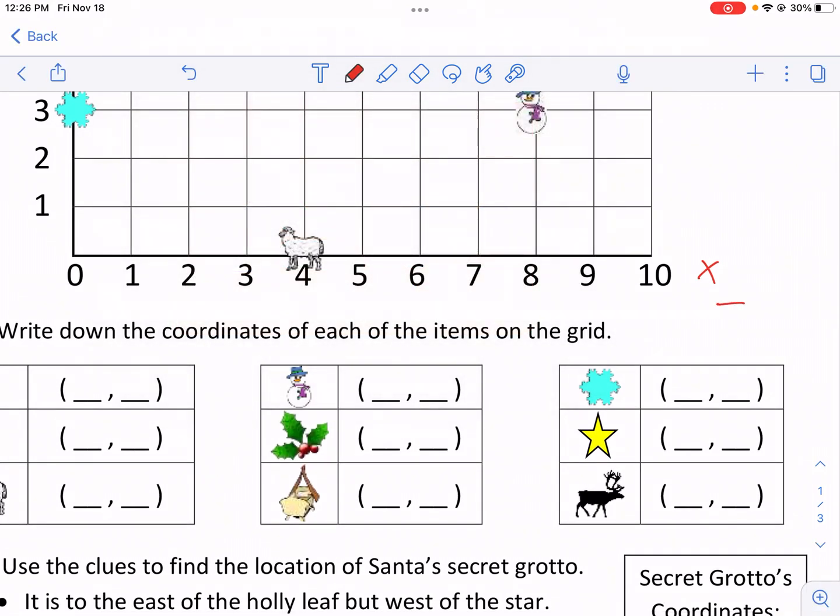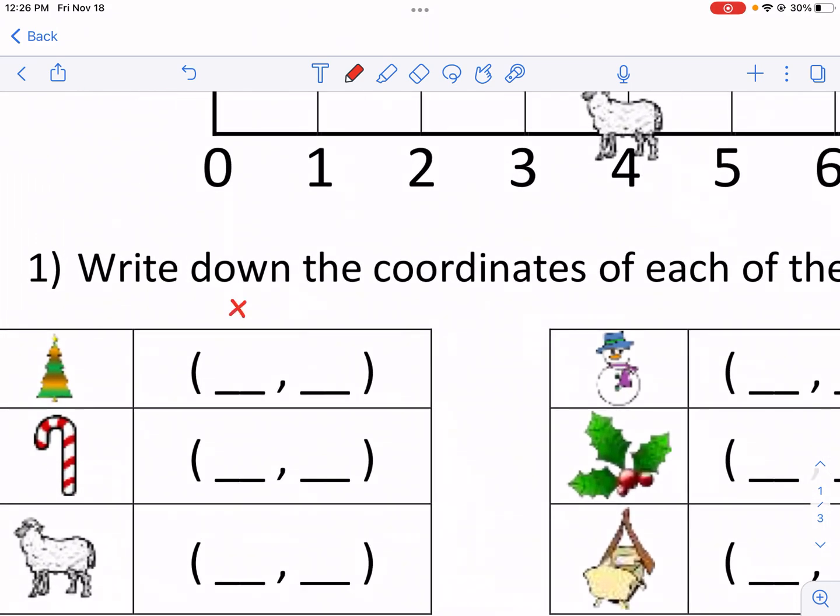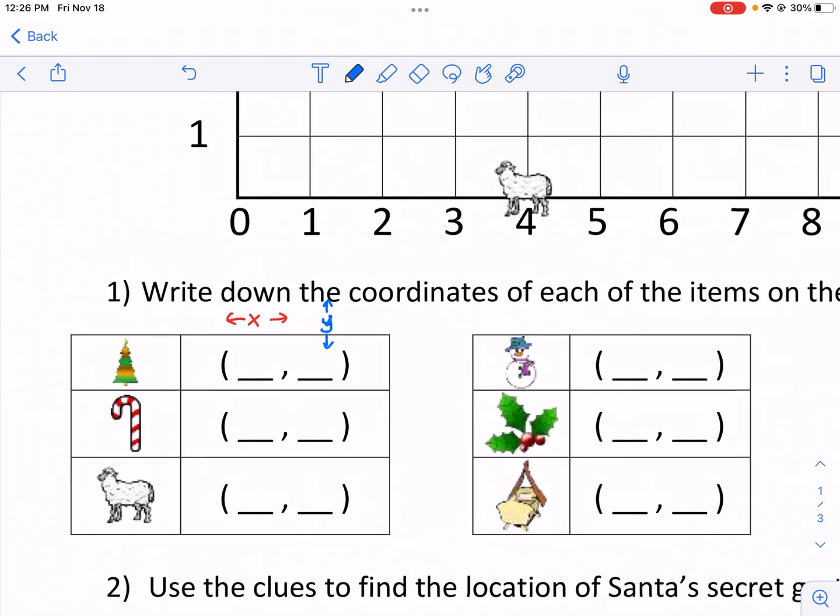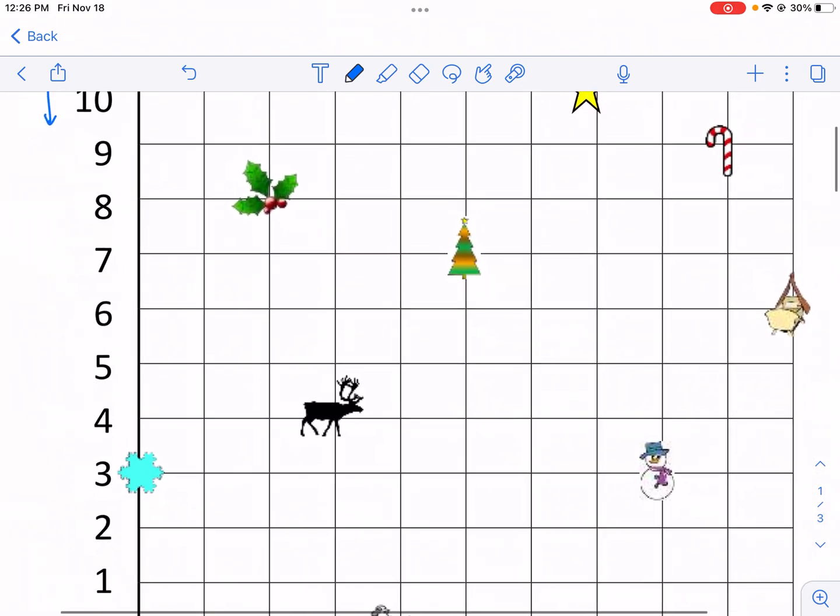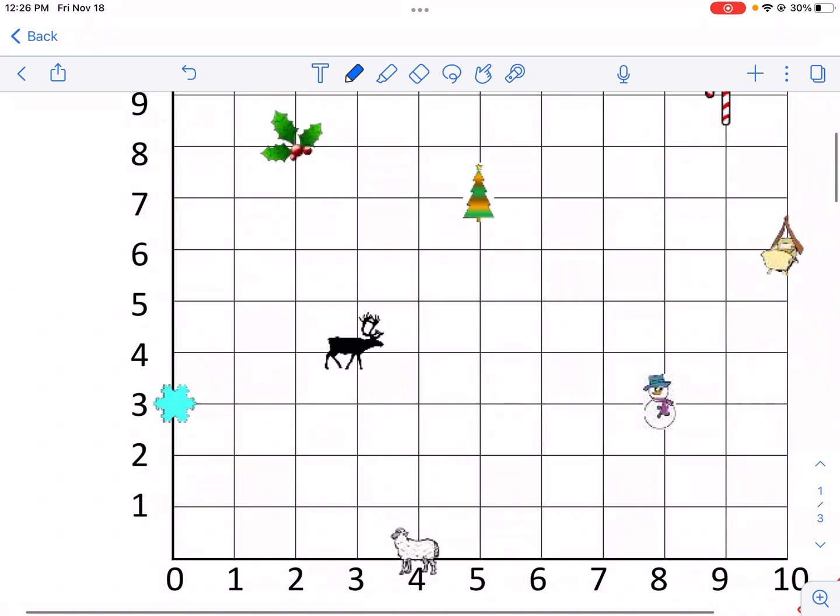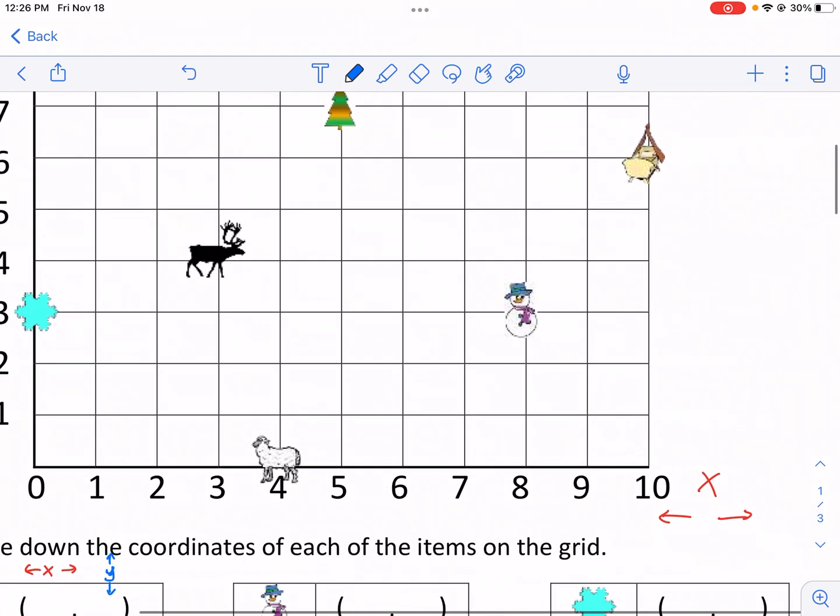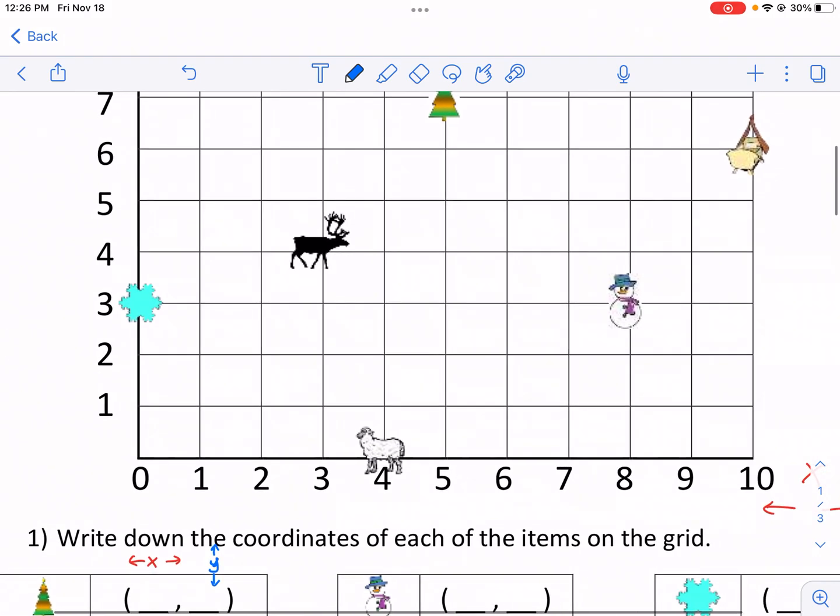Now the first number that's going to be listed is always the x. So the left and right gets listed first, and the up and down gets listed second. Let me draw this y. So this one gets listed second. We're going to try to find this Christmas tree first, and then we're going to find what coordinates match up to its location. We're going to start always with the left and right one. You're going to start with this bottom row first.